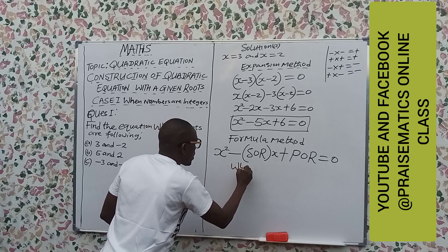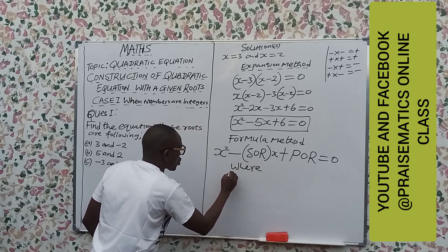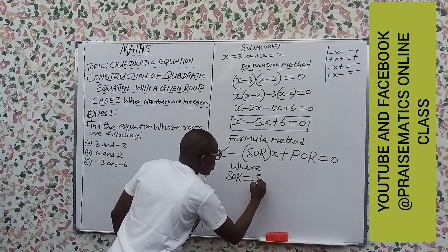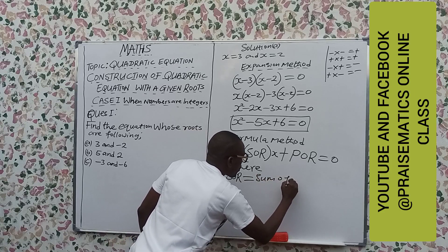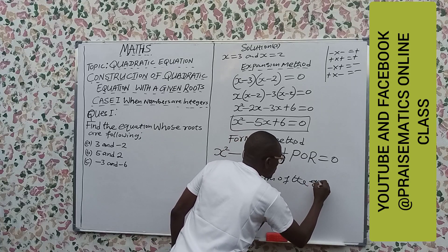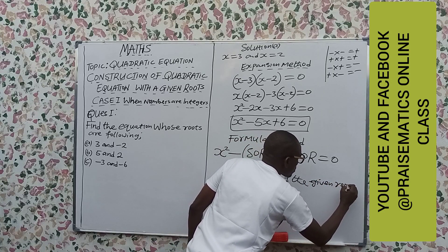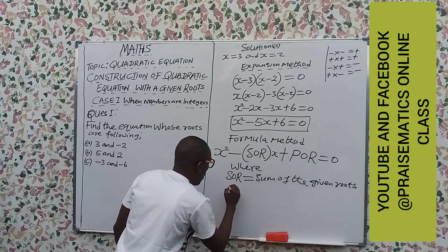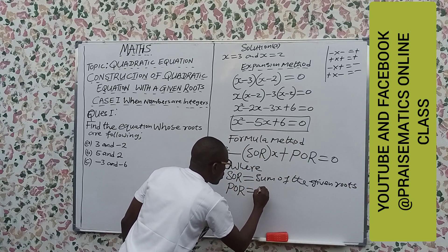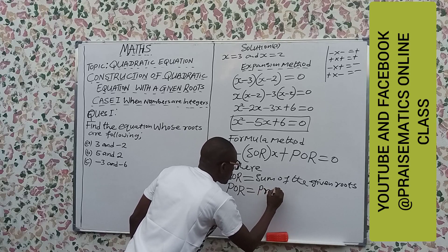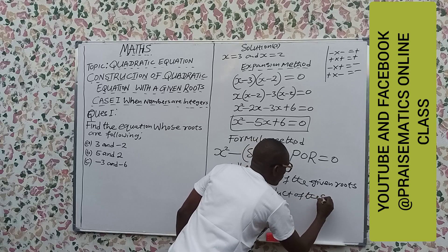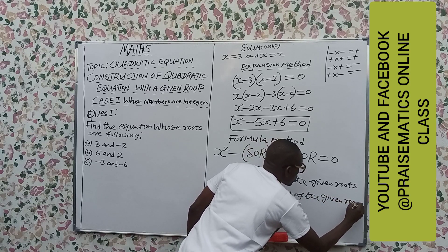And what does it mean? Let me define it. Where sum means sum of the given roots, and product means product of the given roots.